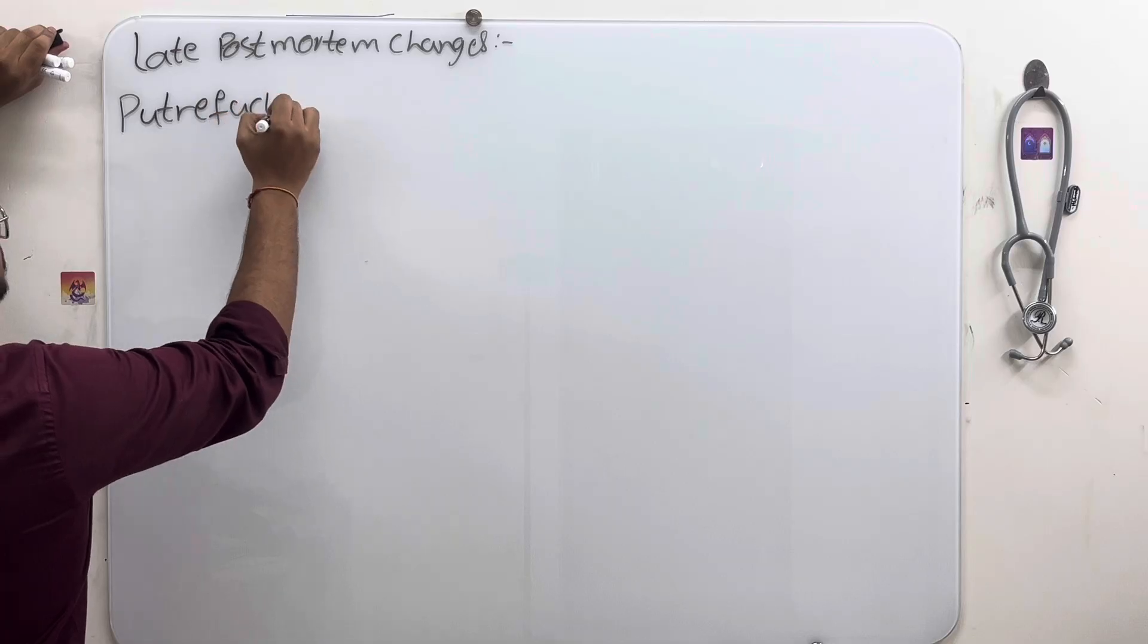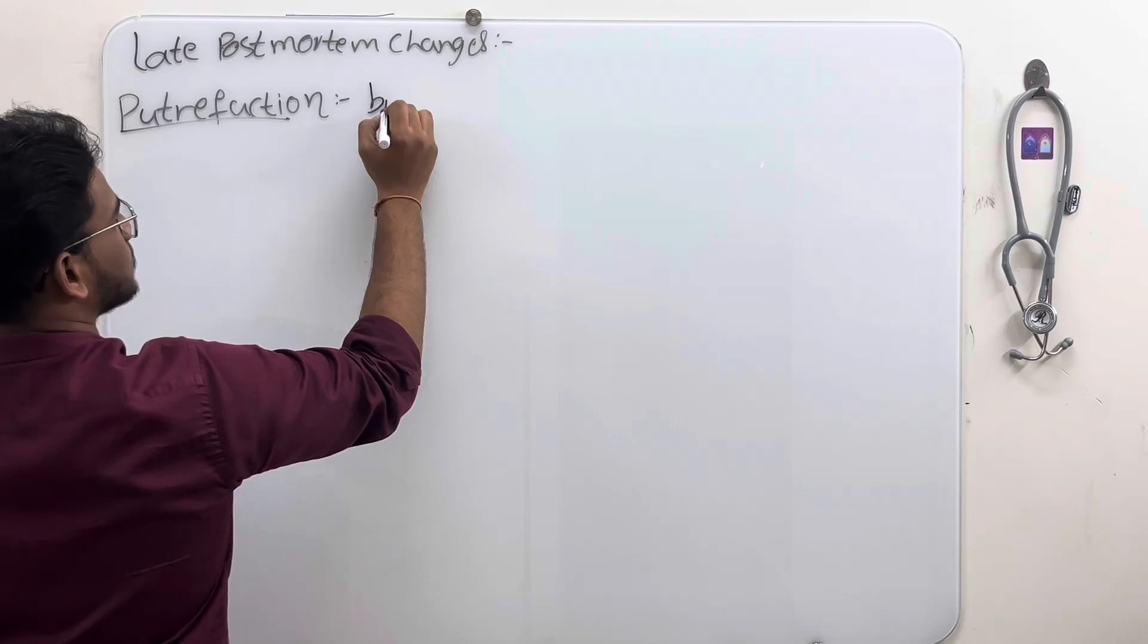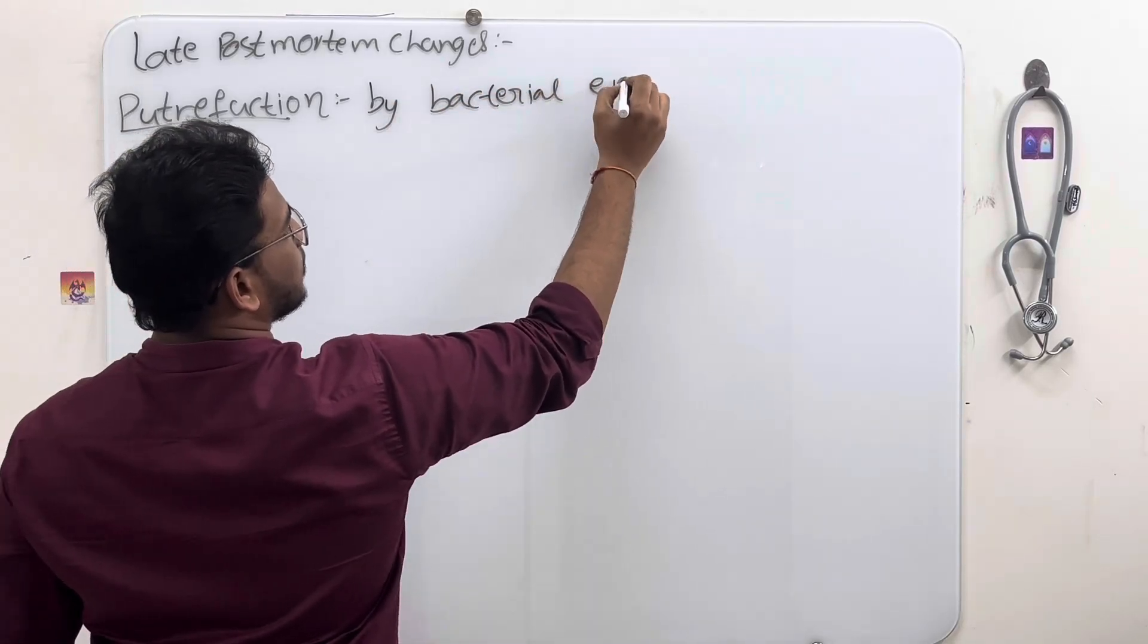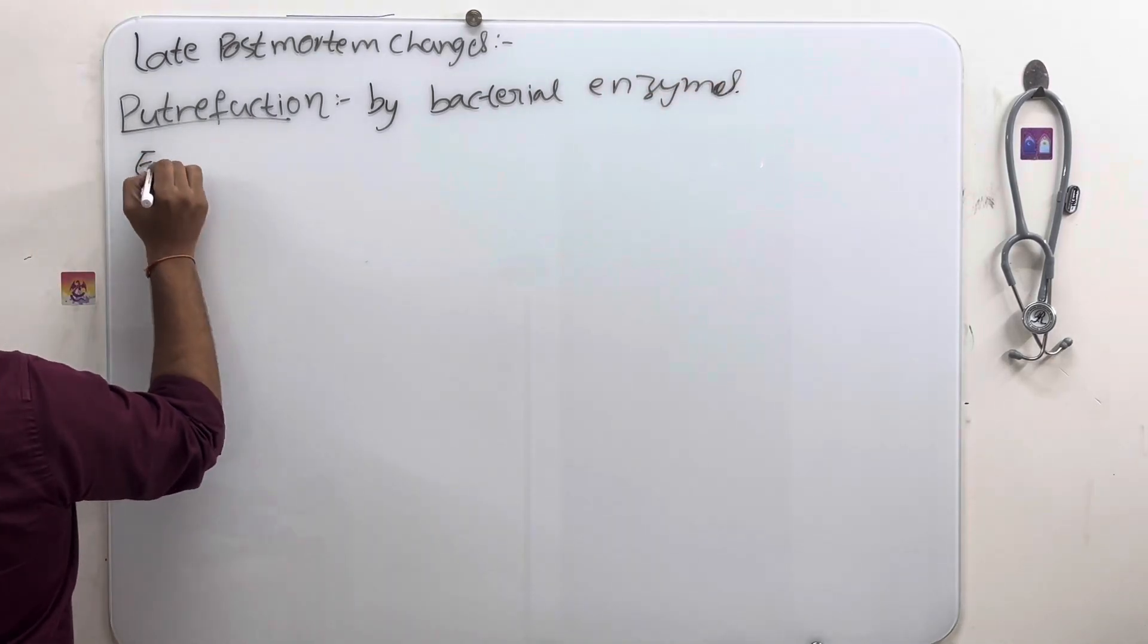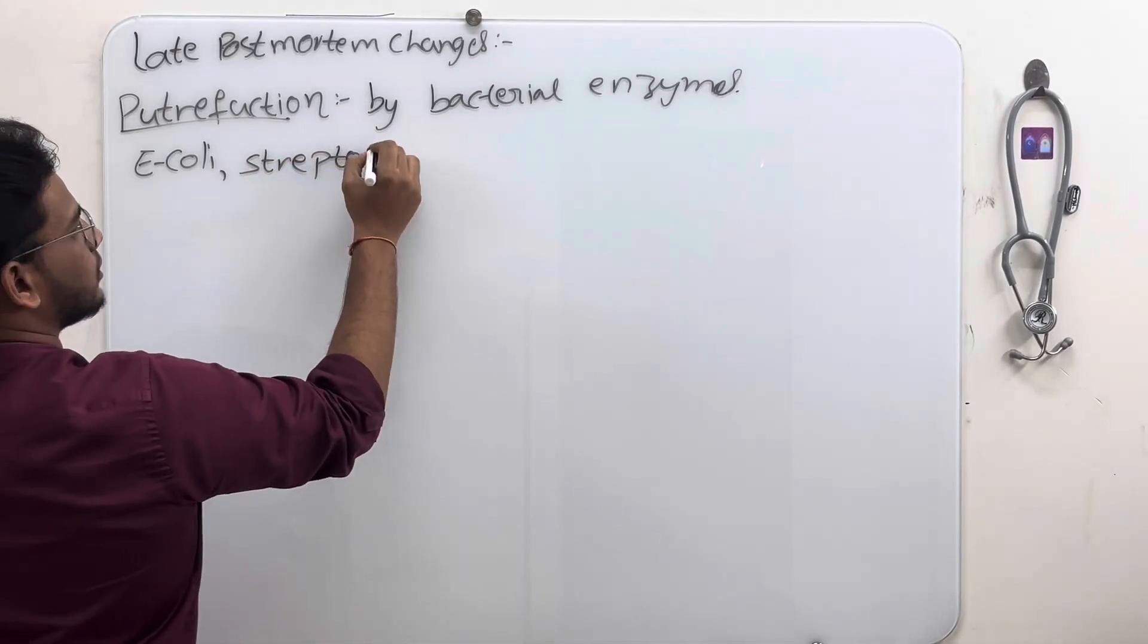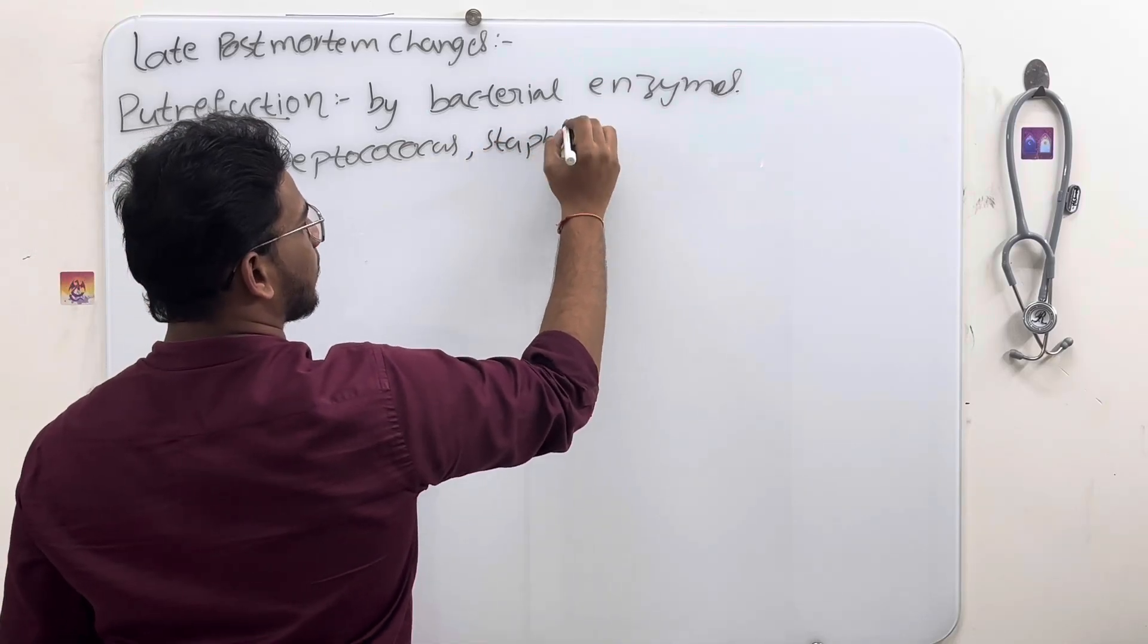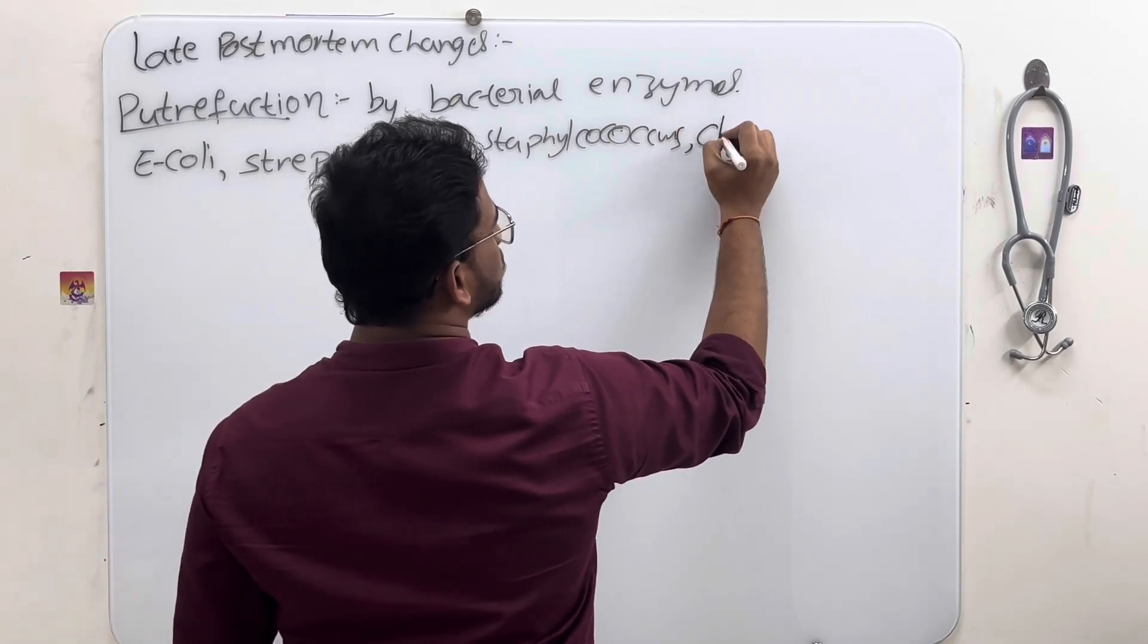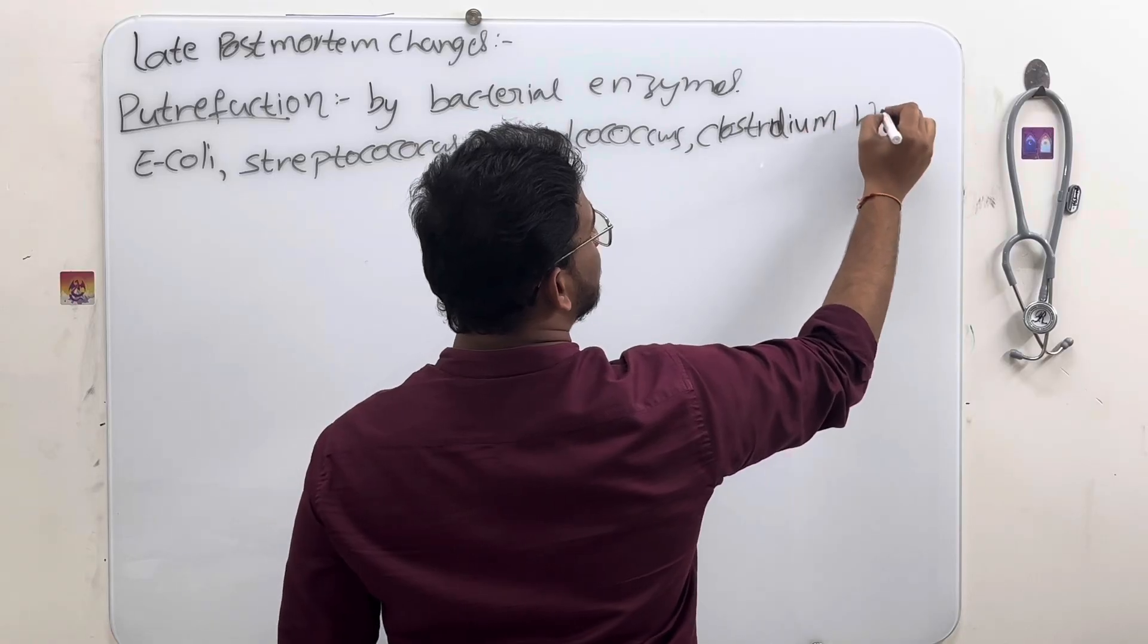Putrefaction, what is meant by putrefaction? It is done by bacterial enzymes like E. coli, streptococcus, staphylococcus and clostridium welchii.